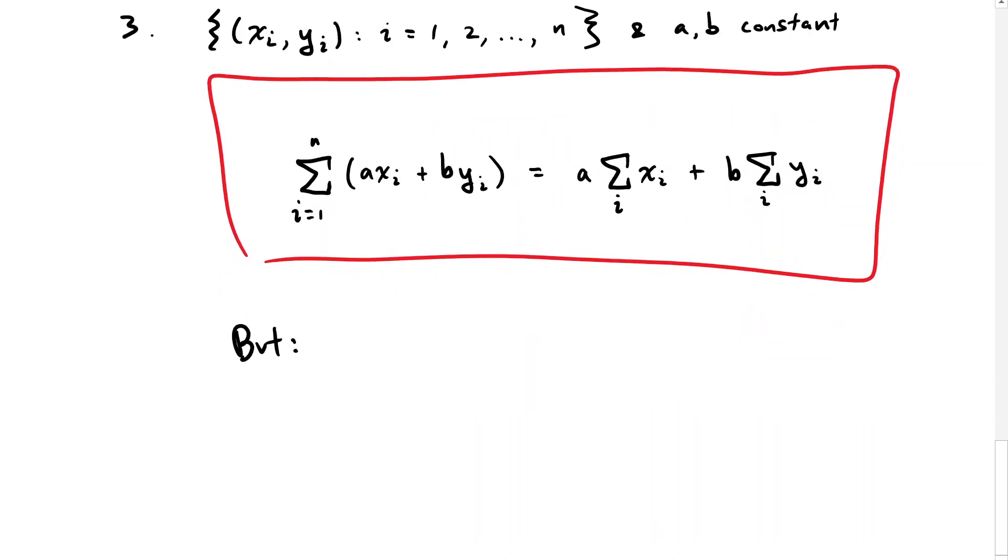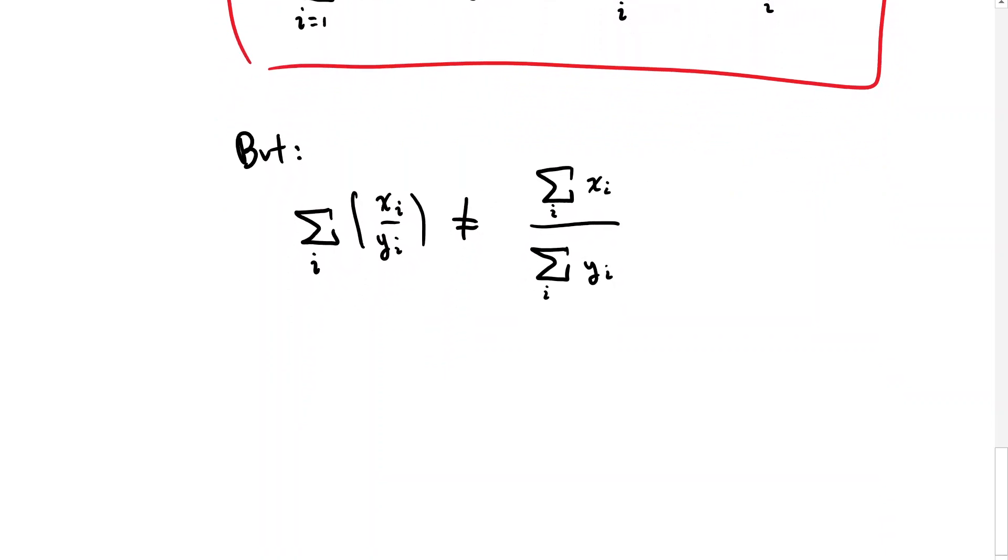Don't let this fool you into thinking you can do the following. The sum of xi over yi is not equal to the summation of all the x's divided by the summation of all the y's. Just to show you why that's not true.